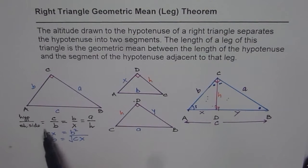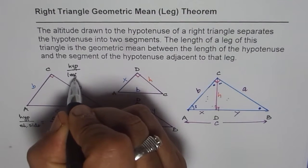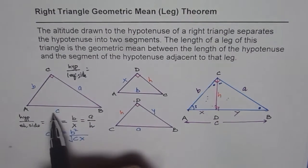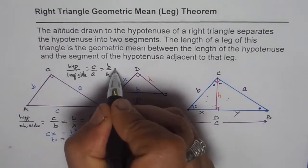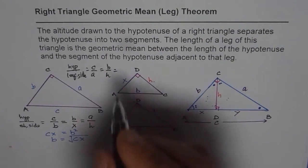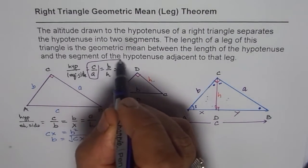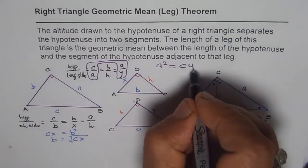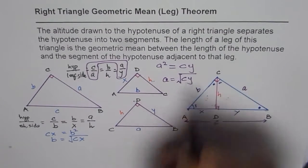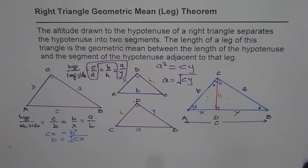Now if you compare hypotenuse to the longer side — we did the shorter side previously — comparing hypotenuse to longer side: the hypotenuse is c, the long side is a, which equals b over h from the second triangle, and equals a over y from the third triangle. Considering these two ratios, a squared equals cy, or a equals the square root of cy. So side a is the geometric mean of the hypotenuse and the adjacent segment y. That is how you prove it.